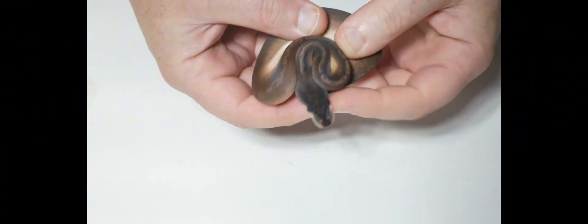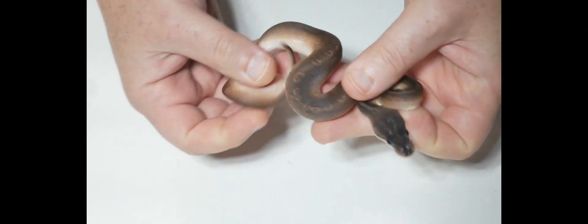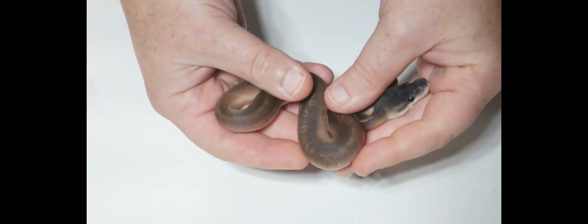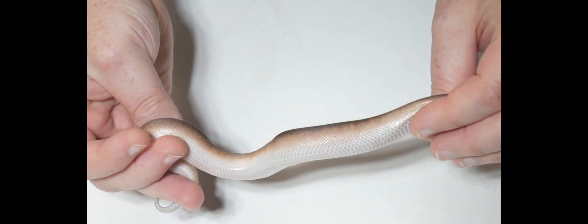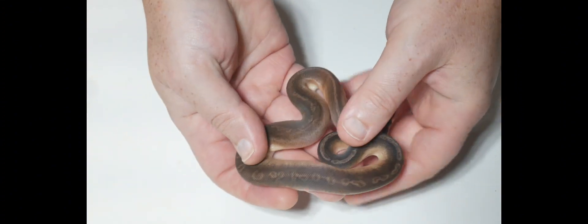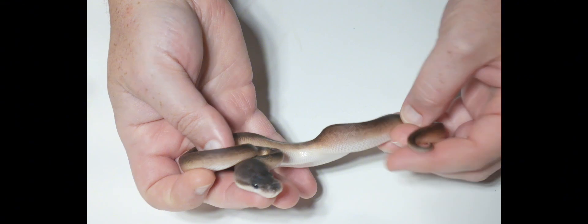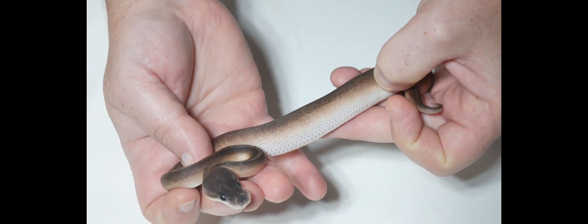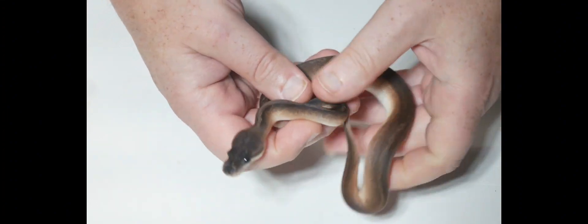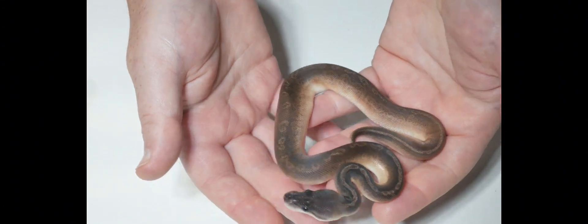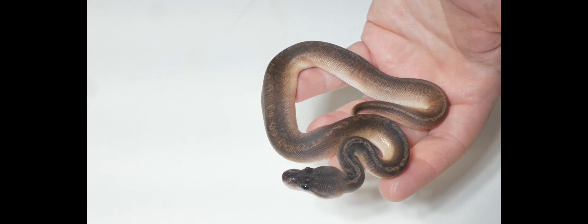This is number five. So this is another cinnamon sunset. It's a male, it's not a holdback. Really cool. I love the orange, how it goes all the way down. Just so cool. So this boy is available, it's a cinnamon sunset. If you're interested let me know.